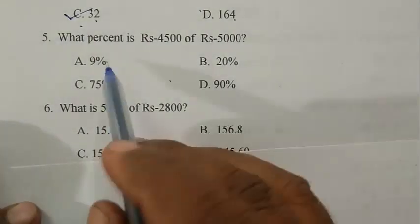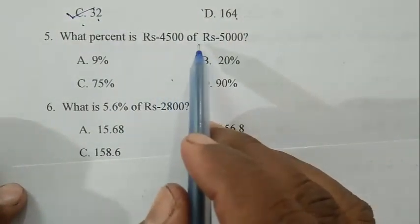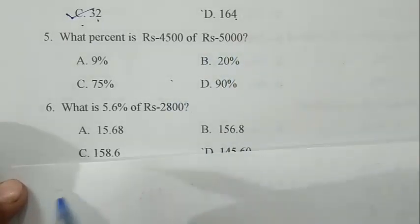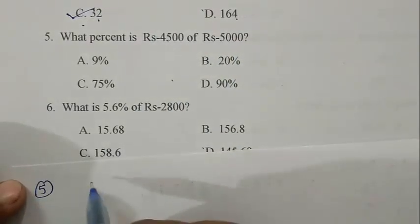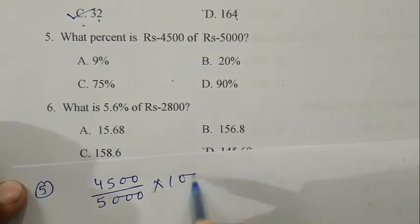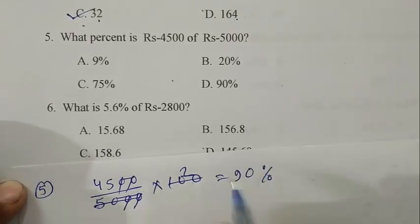Question number five: what percent is 4500 of rupees 5000? So we simply write it 4500 by 5000 into 100. So it becomes 90. So 90 percent is the right answer. D is the right answer.